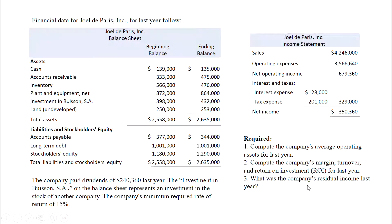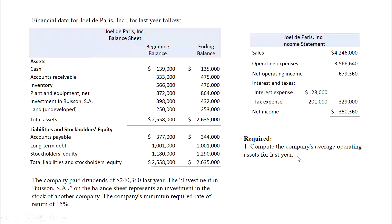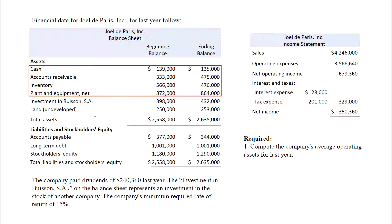One thing they do not give us directly that we need for our ROI and residual income calculations is average operating assets. So our first requirement is calculating that. Now where do we find assets? We find assets on our balance sheet. The problem is not all of the assets listed may be operating assets. For something to be an operating asset, it needs to help contribute towards the company providing its product or service to the customer.